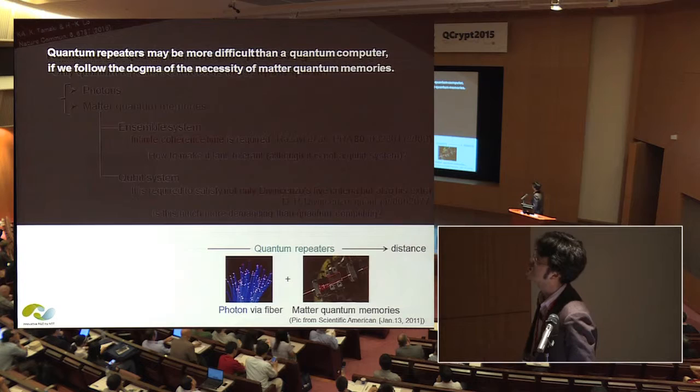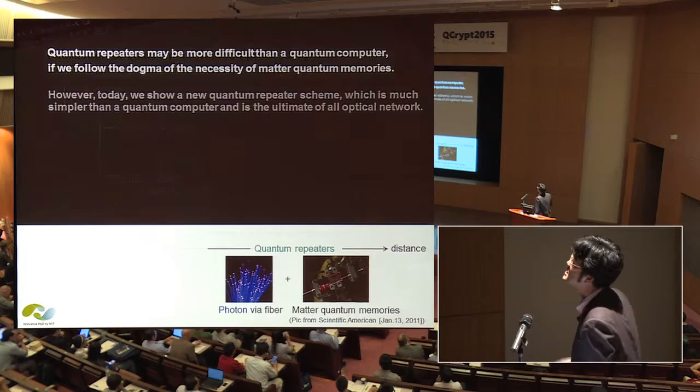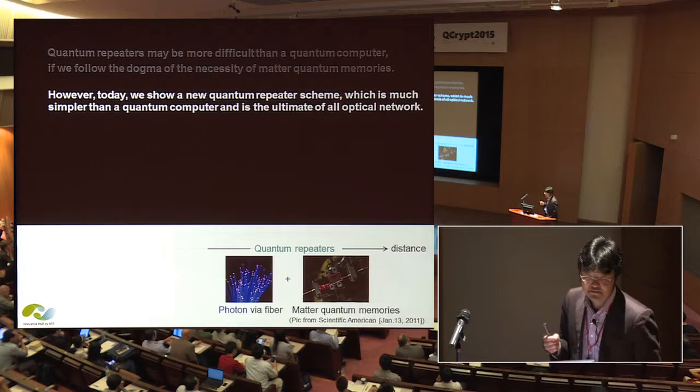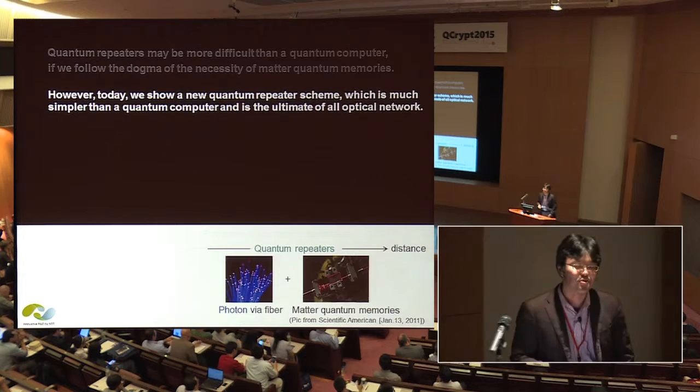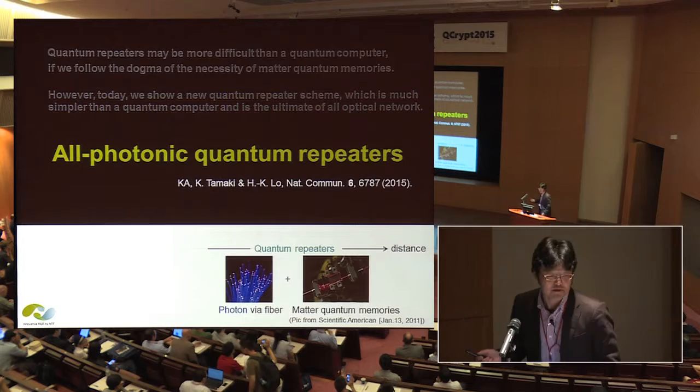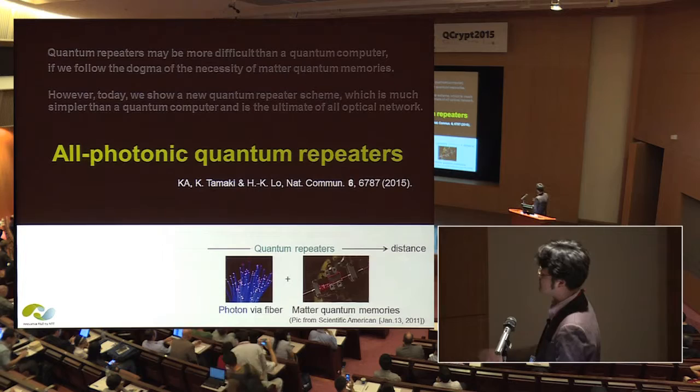Therefore, if we follow the dogma of the necessity of matter quantum memory in the quantum repeaters, quantum repeaters may be much more difficult than quantum computers. This is undeniable from a theoretical perspective without a future experimental breakthrough. I await the arrival of such an experimental breakthrough. But today, I'd like to mention a new quantum repeater scheme that is much simpler than a quantum computer. This seems to be the ultimate challenge for the all-optical approach. We call it all-photonic quantum repeaters.